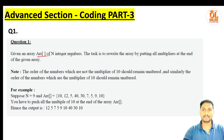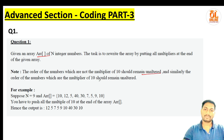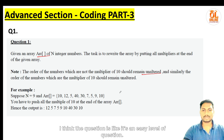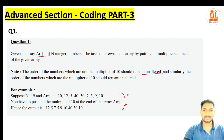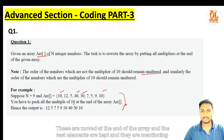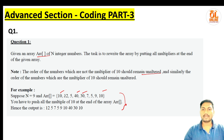Given an array arr of n integers, the task is to rewrite the array by putting all multiples of 10 at the end. The order of numbers which are not multiples of 10 should remain unaltered, and similarly the order of multiples of 10 should also remain unaltered. For example, with n=9, elements like 10, 40, 30, and 10 are moved to the end, while 12, 5, 7, 5, 9 remain in their original order.